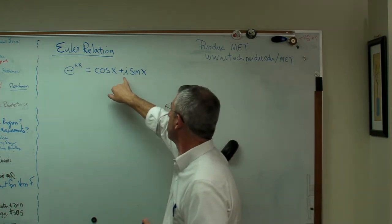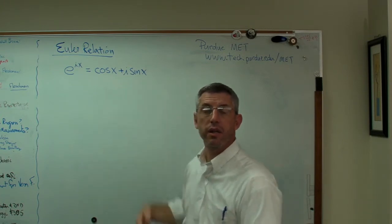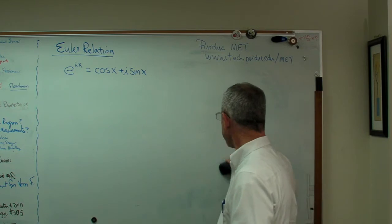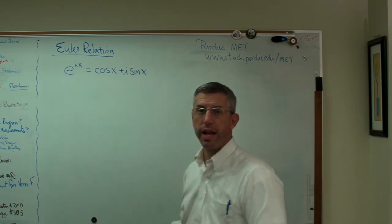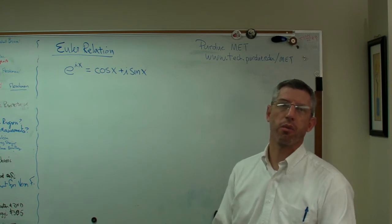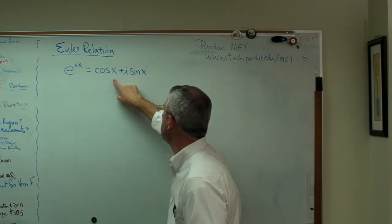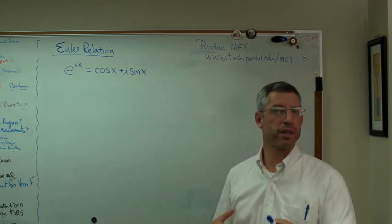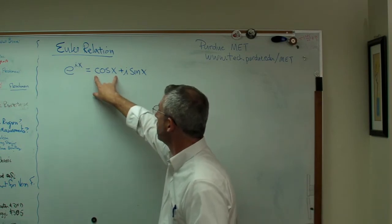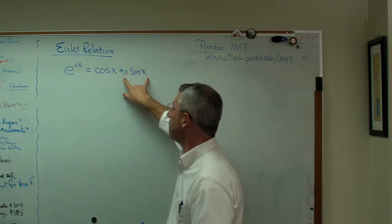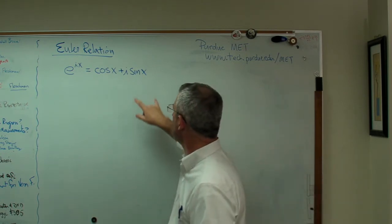The thing that upsets my students sometimes, makes them scratch their heads, is the existence of i, the square root of minus one. To my way of thinking, calling that an imaginary number was a terrible idea. Calling this expression real and that one imaginary is terrible because imaginary suggests that somehow it's not a legitimate number. It is.